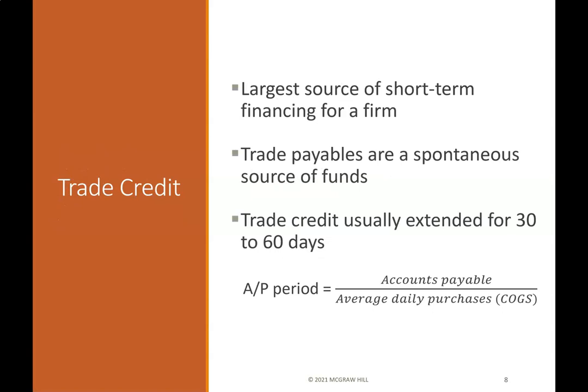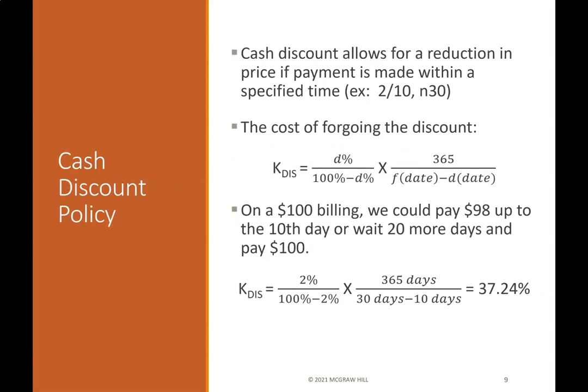Trade credit is the largest source of short-term financing for a firm. Trade payables are a spontaneous source of funds. Trade credit is usually extended for 30 to 60 days. The accounts payable period equals average accounts payable divided by average daily purchases or cost of goods sold. A cash discount policy allows for a reduction in price if payment is made within a specified time.